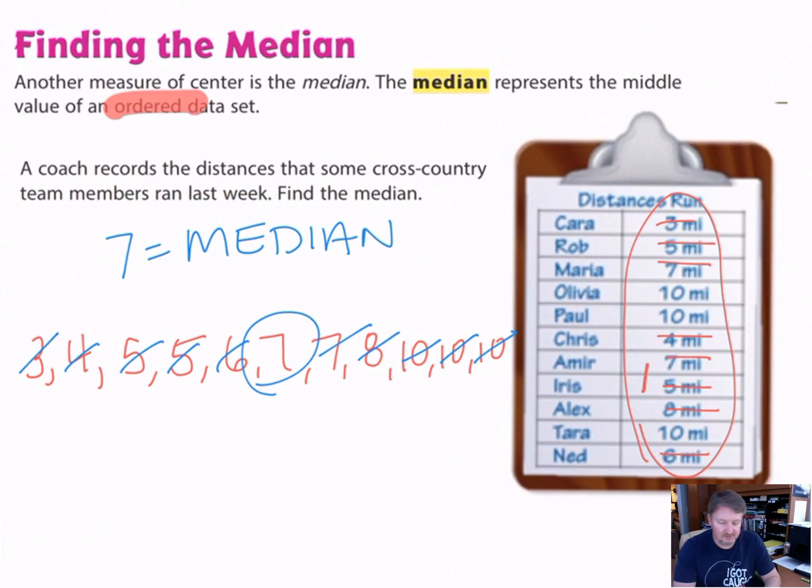Seven is the median. And what that tells me is that the cross country team members run about seven miles a week. There is another value here. We have three tens—that is the mode. 10 equals the mode because that's the number that appears most often. We also had two sevens and two fives. They are not the mode. You can have more than one mode, but if the seven appeared three times and the 10 appeared three times, then you would have two modes because they both appeared the same number of times.